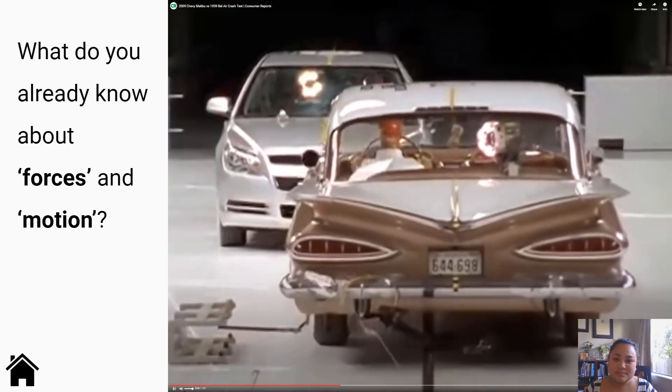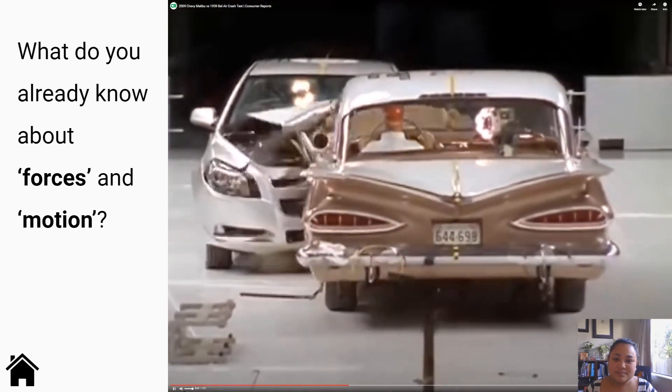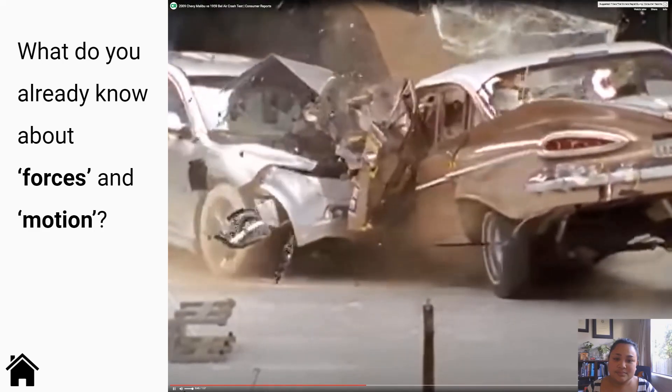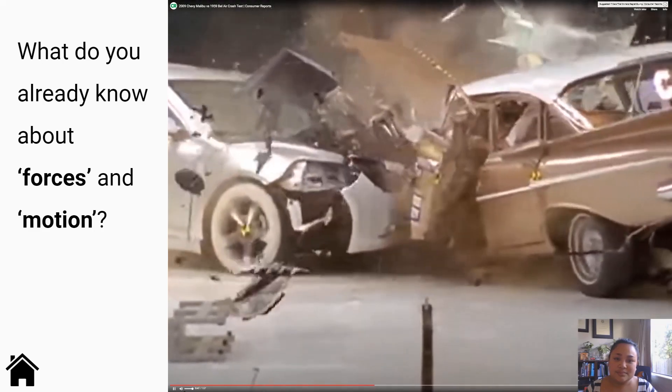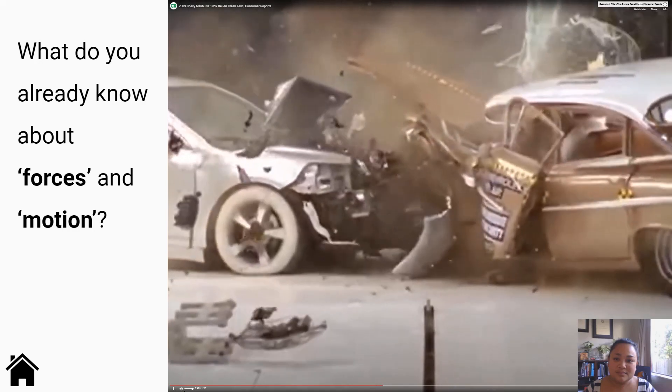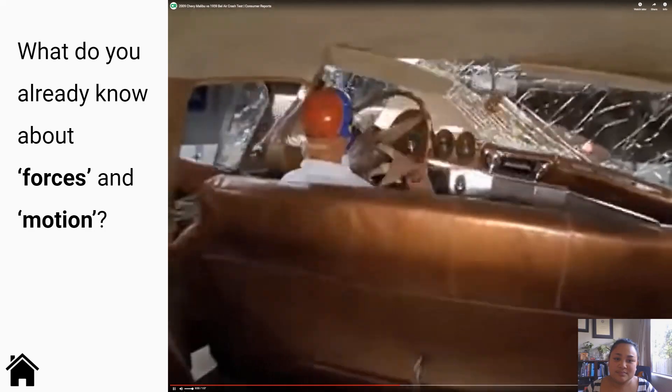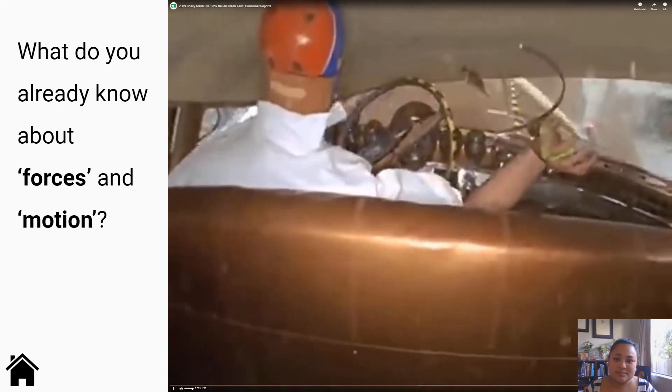The two cars collide in an explosion of metal, glass and plastics. Where the Malibu crumple zone absorbs much of the crash forces ahead of the windshield, the Bel Air structure allows the lighter car to compress the passenger compartment. The impact is made worse for the Bel Air driver by the lack of airbags, head restraint and even a seat belt.